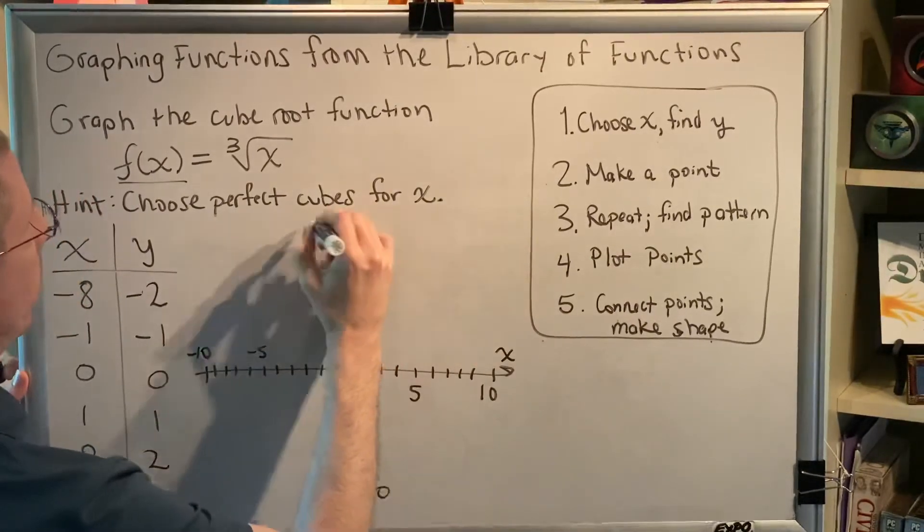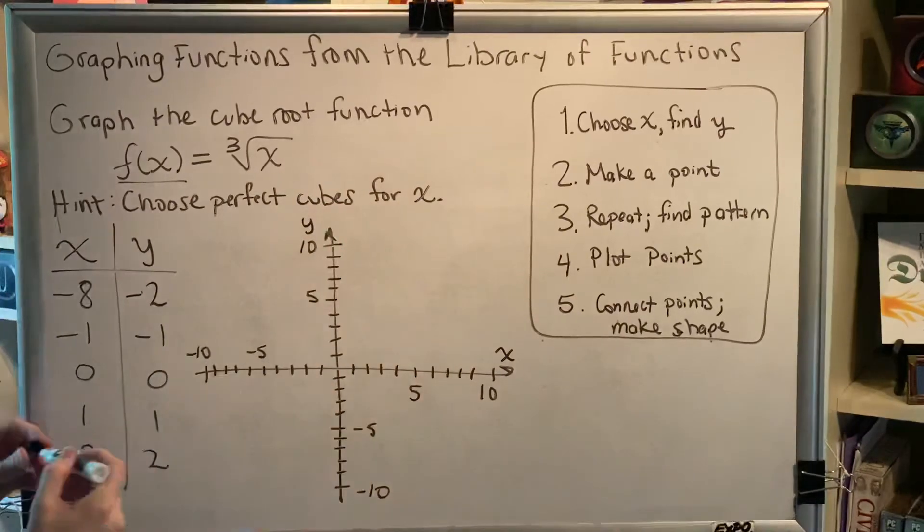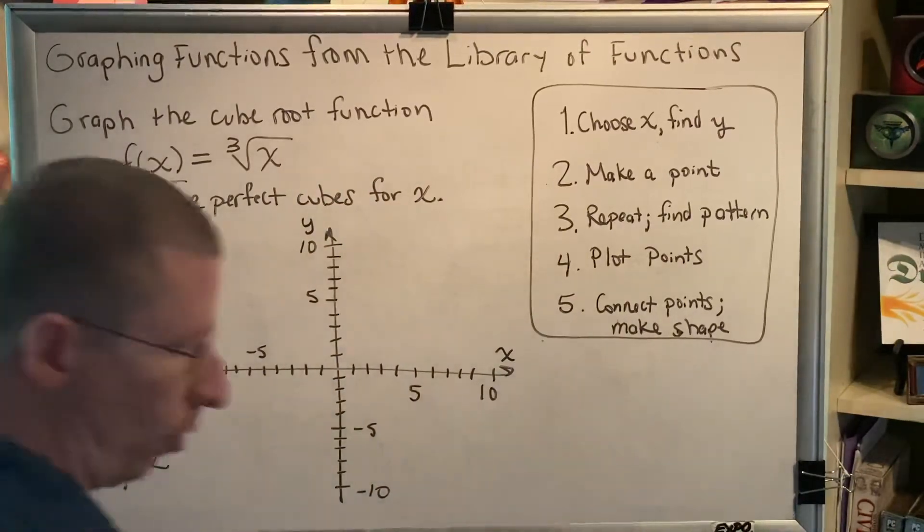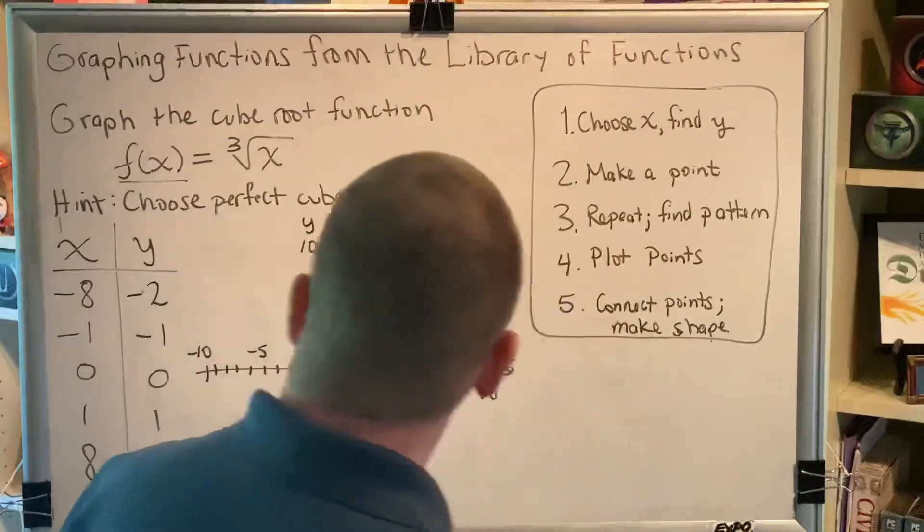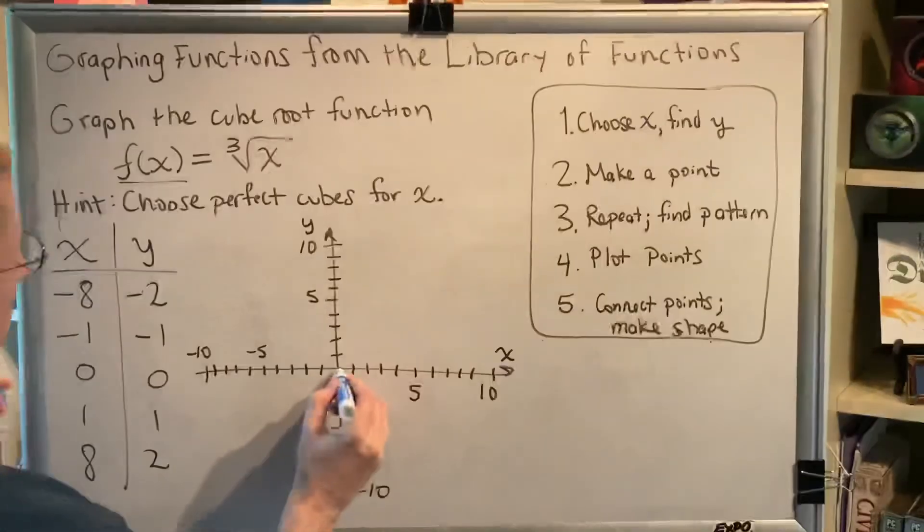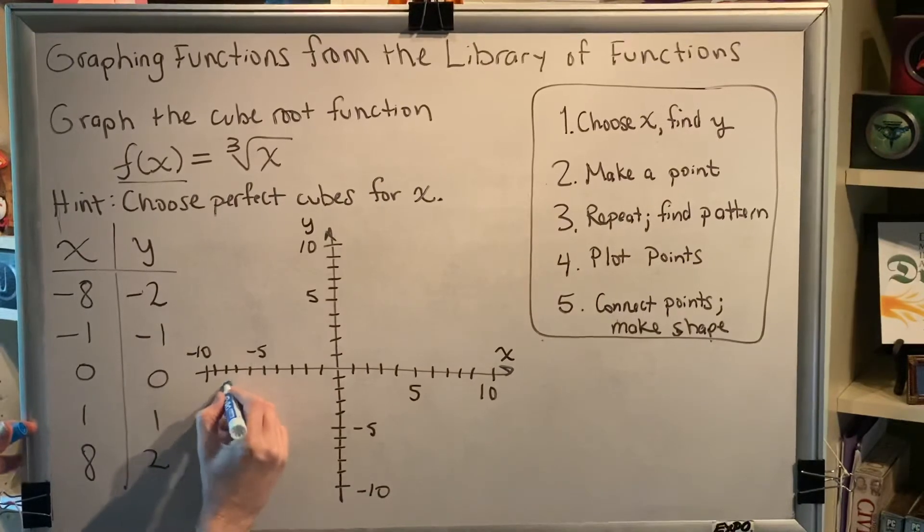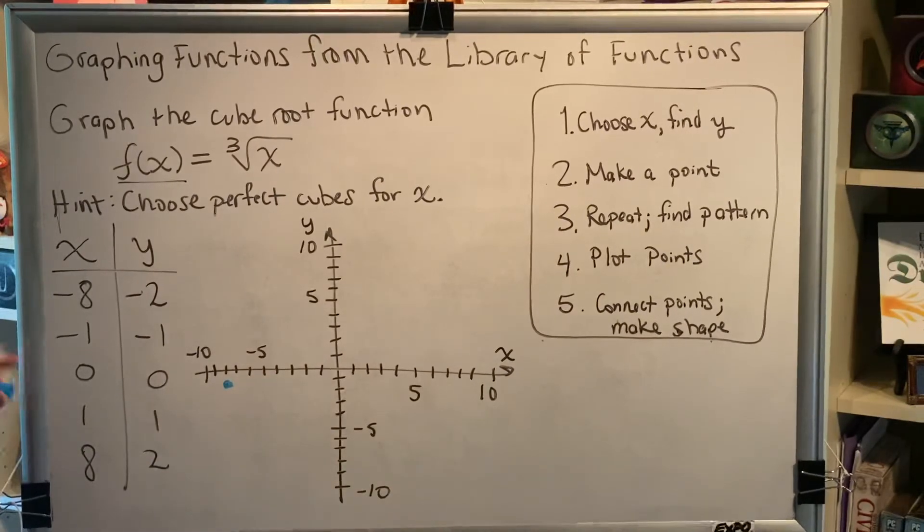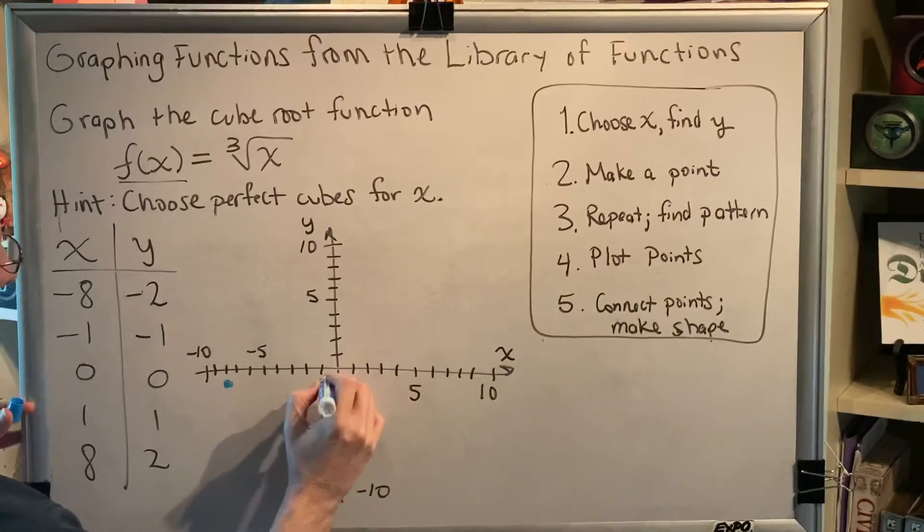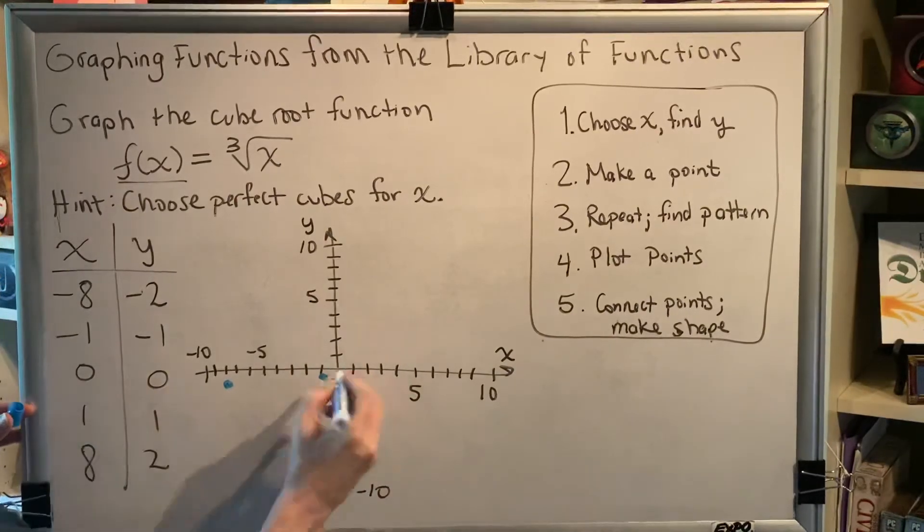So let's start with negative 8, negative 2. That's the point you get when you start at the origin and go 8 steps to the left and 2 steps down. Next, negative 1, negative 1 would be here. 0, 0, the origin.